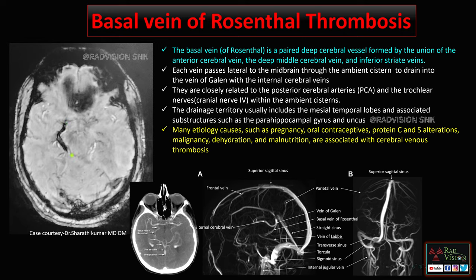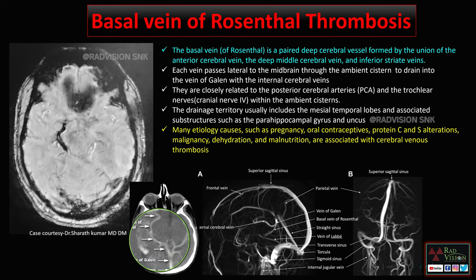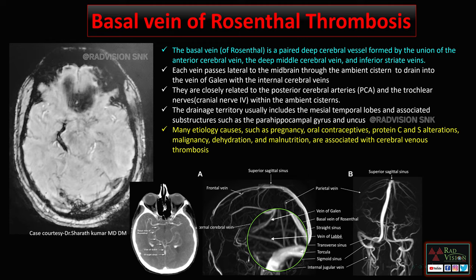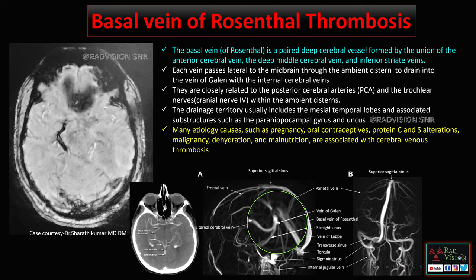The basal vein of Rosenthal is a deep cerebral vein formed by the union of the anterior cerebral vein, deep middle cerebral vein, and insular striate veins. Each vein passes lateral to the midbrain — here you can see it passes lateral to the midbrain — and drains into the vein of Galen. Along with the internal cerebral vein, it drains into the vein of Galen.